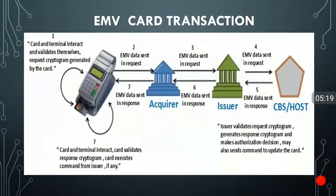At the issuer bank, the request cryptogram is validated — since the specific keys are generated by the issuer bank, it validates whether the card was issued by them or not. After that, it sends a response cryptogram in response and also does the authorization of the card. In some cases it also sends commands to update the card. The issuer sends all details to the CBS, the CBS does the accounting, and the response goes from the issuer to NPCI or MasterCard/Visa network, then to the acquirer bank, and the final response reaches the POS device.